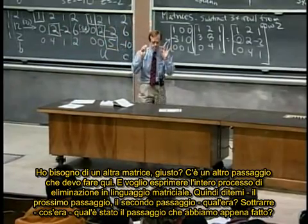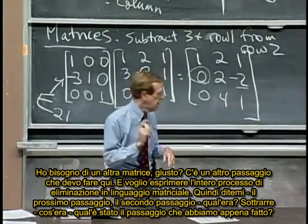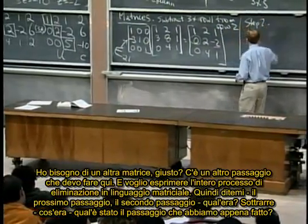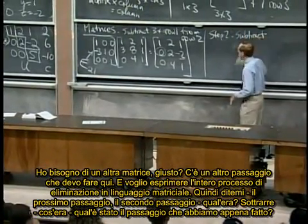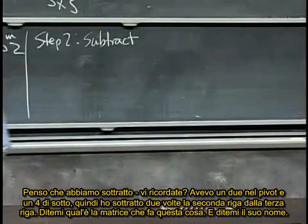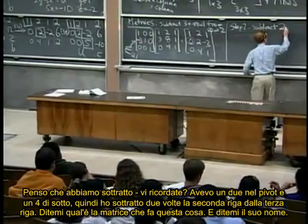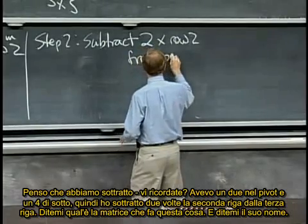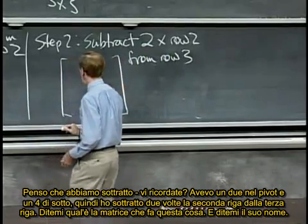I want to express the whole elimination process in matrix language. So next step — step two — which was what? What was the actual step that we did? I had a two in the pivot and a four below it, so I subtracted two times row two from row three. Tell me the matrix that'll do that, and tell me its name.